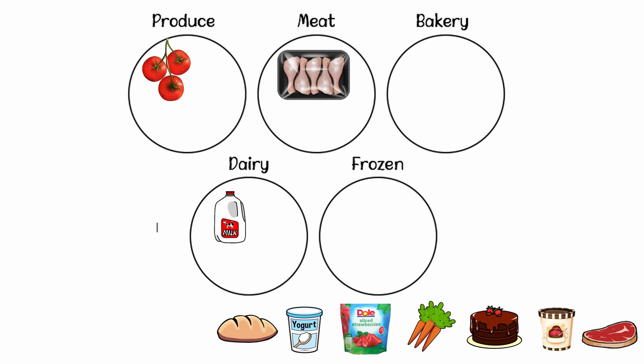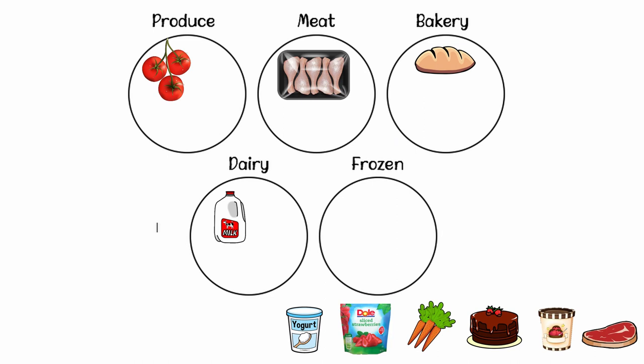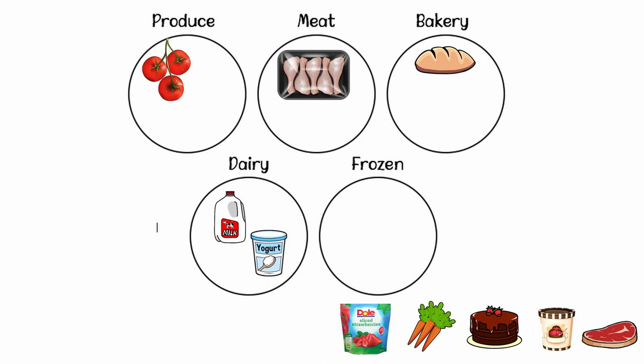Next we have a fresh loaf of bread. Where would we find a fresh loaf of bread? If you said the bakery department, you are correct. Next it's yogurt. Yogurt is made from milk — if you said the dairy department, you are correct. Let's put the yogurt in the dairy department. Next we have frozen strawberries. What section would we find frozen strawberries in? If you said the frozen department, you are correct. Let's put the frozen strawberries in the frozen section.